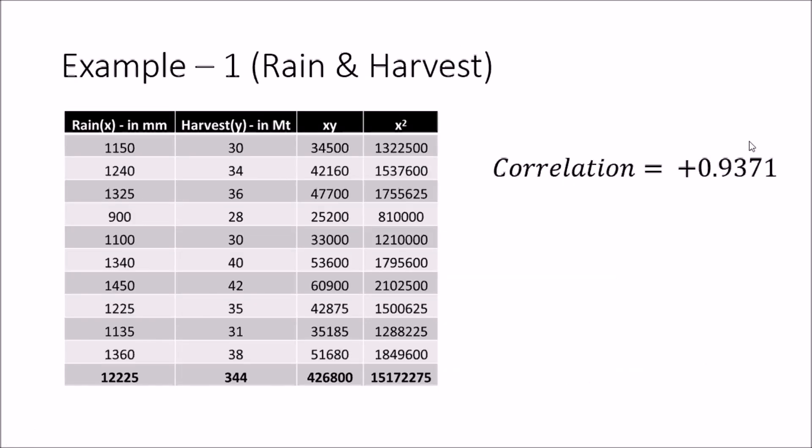Now we will look at some examples. The first example is rain and harvest. Remember, in order to find the regression you first have to check whether there is a correlation — if there is no correlation you cannot find a regression. We used this example in an earlier correlation tutorial, and the correlation was r = +0.937, which is a strong positive correlation. Therefore we can proceed and find the numerical relationship between these two variables.